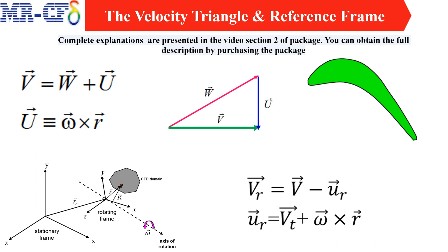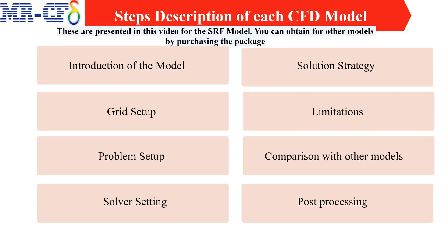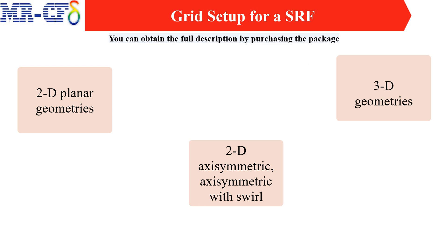There is a relationship between relative velocity and absolute velocity. In turbo machinery, this relationship can be illustrated using the laws of vector addition — this is known as the velocity triangle. For each CFD model introduced in this package, the following are described in the commentary: introduction of the model, grid setup, problem setup, solver settings, solution strategy, and limitations.